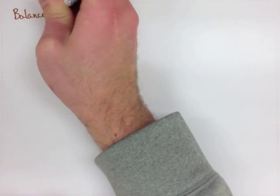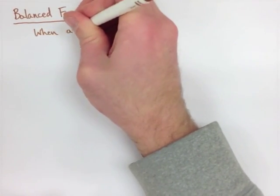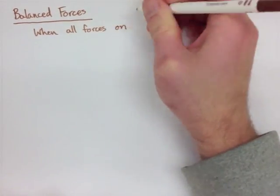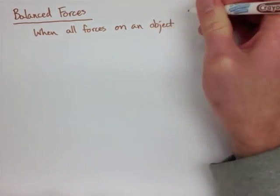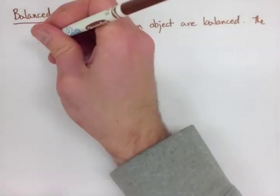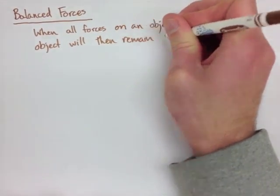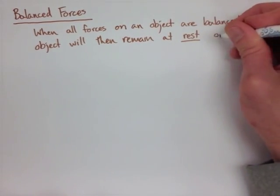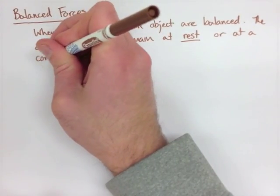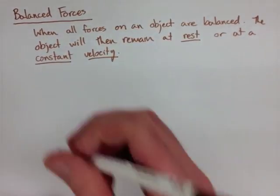Now when an object doesn't have a net force, it has balanced forces. This is a really important concept to understand, because when all the forces on an object are balanced, the object either stays at rest, meaning nothing's going to be moving, or it stays at constant velocity. The object can continue moving at the same speed, because no force is being applied to it.